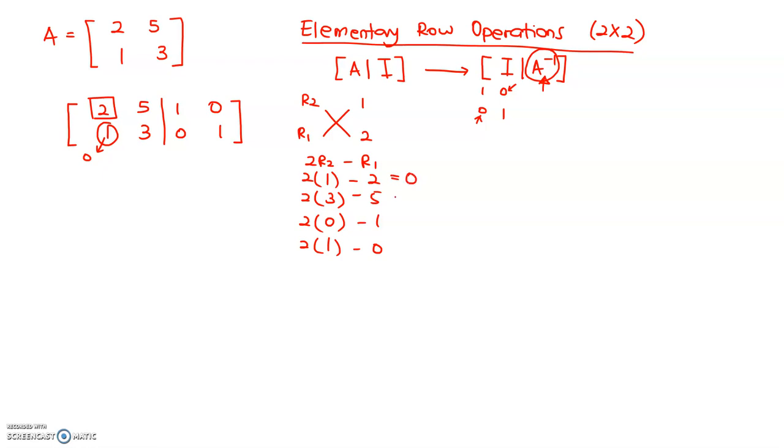So, 2 minus 2 is 0. 6 minus 5, this is 1. 0 minus 1 is negative 1. 2 minus 0 is 2. So, we already changed row 2. Let us write down the new row 2. The formula is 2 row 2 minus row 1.